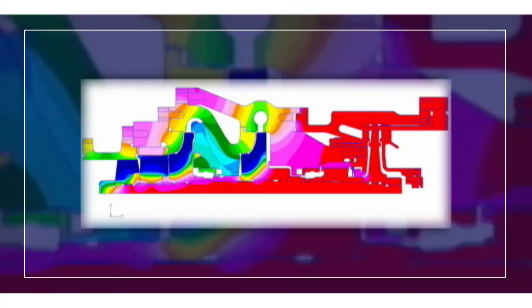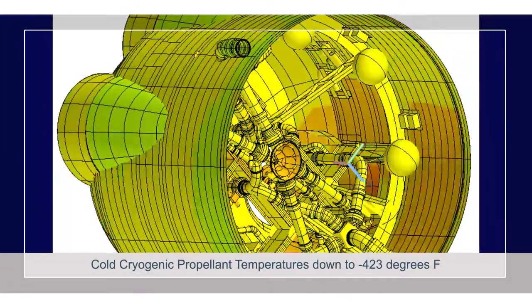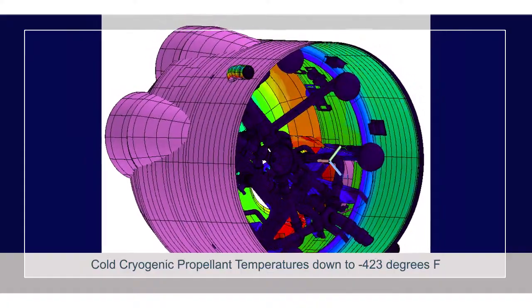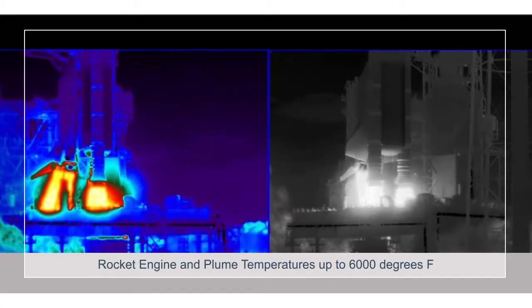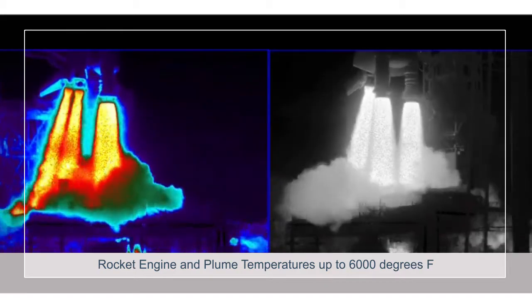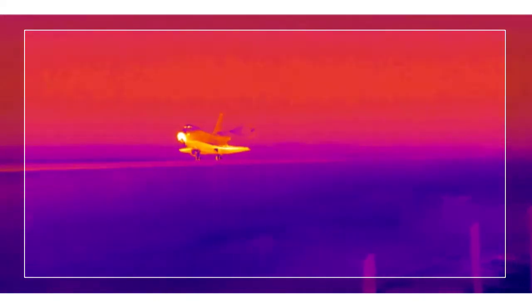In addition to these challenges, Marshall engineers have to plan and design for extremely cold cryogenic propellant temperatures down to negative 423 degrees Fahrenheit, and rocket engine and plumes up to 6,000 degrees. Leaving and entering the atmosphere at high speeds creates its own set of issues with the vehicle's design.